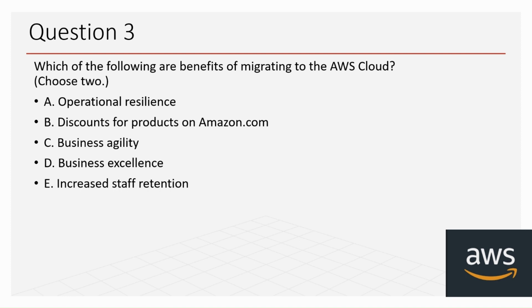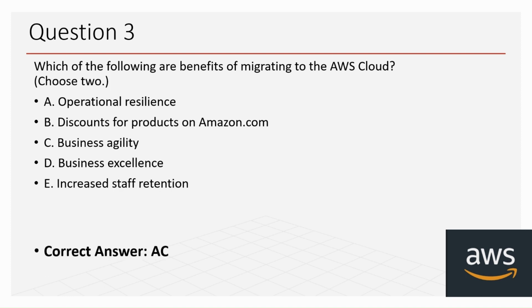Question three: which of the following are benefits of migrating to the AWS Cloud? Choose two. The options are: operational resilience, discounts for products on Amazon.com, business agility, business excellence, and increased staff retention. The correct options are A and C — operational resilience and business agility.